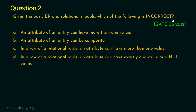Let's step into question number two. Given the basic ER and relational models, which of the following is incorrect? This question was asked in GATE Computer Science 2012. Option A: an attribute of an entity can have more than one value. Option B: an attribute of an entity can be composite. Option C: in a row of a relational table, an attribute can have more than one value. Option D: in a row of a relational table, an attribute can have exactly one value or a null value. Your 20 seconds starts now.